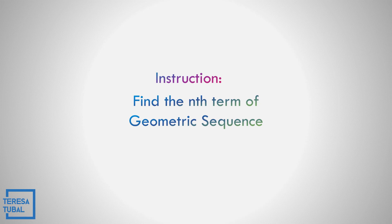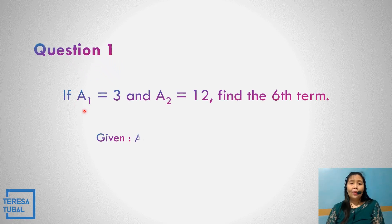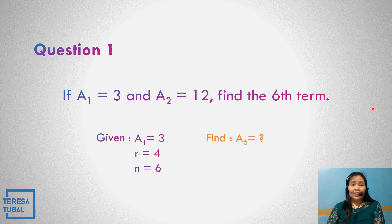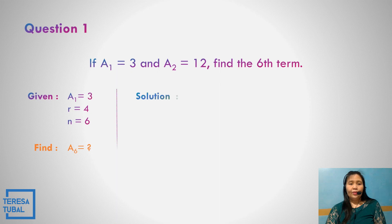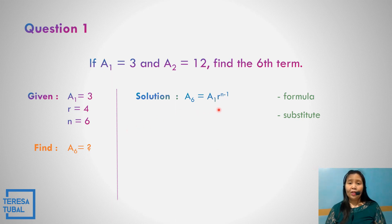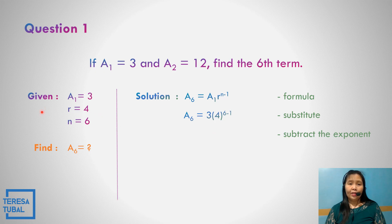Let us find the nth term of the geometric sequence. Question number 1: if a sub 1 is equal to 3 and a sub 2 is equal to 12, find the sixth term. The first term is 3, the common ratio is 12 divided by 3 which equals 4, and n equals 6. The formula is a sub n equals a sub 1 times r raised to n minus 1. Substituting: a sub 6 equals 3 times 4 raised to 6 minus 1, so the exponent becomes 5.